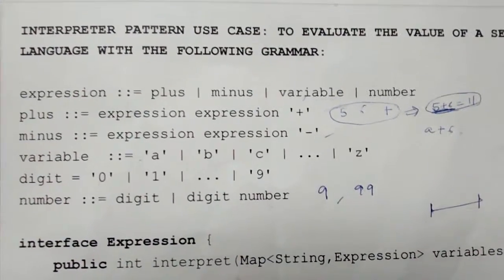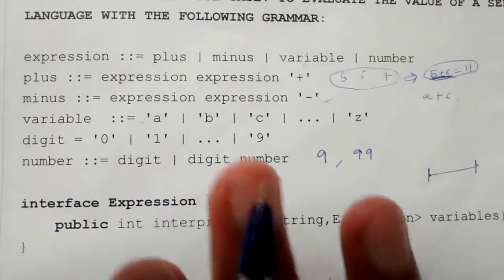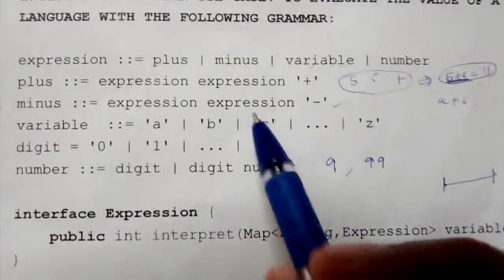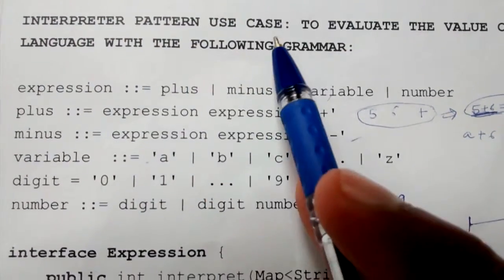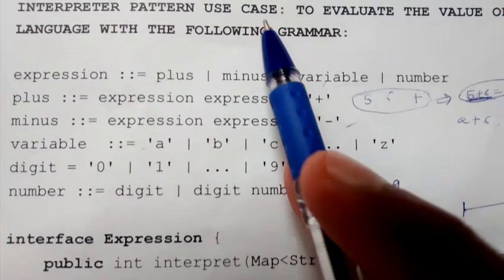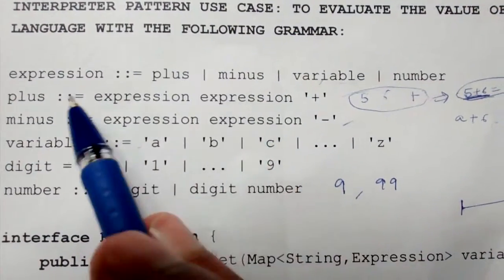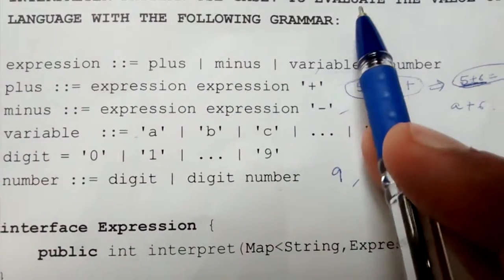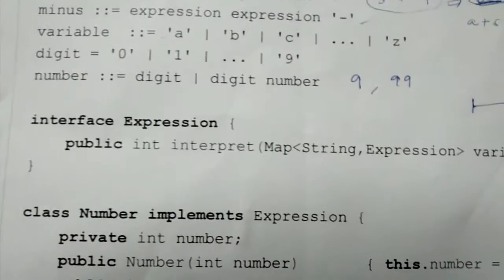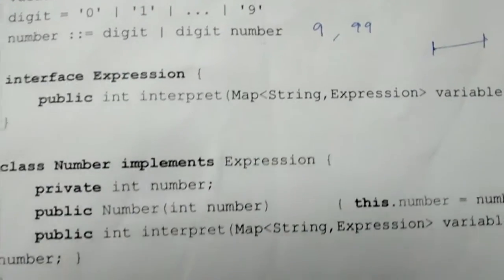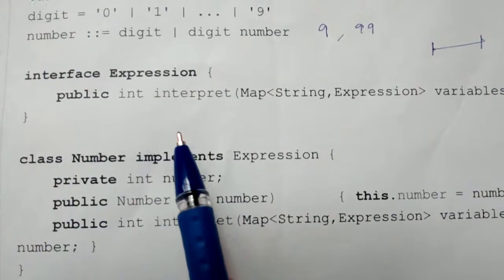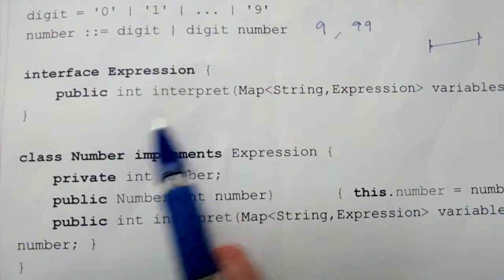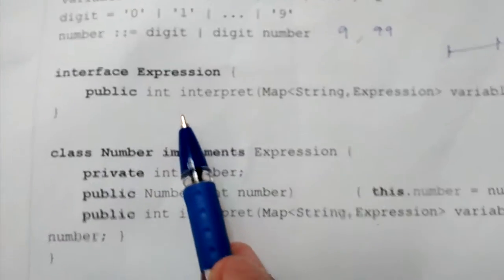In the last lecture, which is a prerequisite for this, we understood how to parse a string in a given language — a sentence given in string form — how to parse it and convert it into Java object form. In this lecture, we'll see how to evaluate that sentence which is in object form.